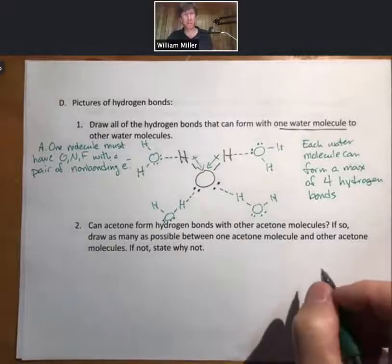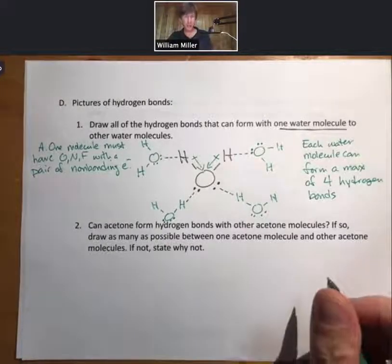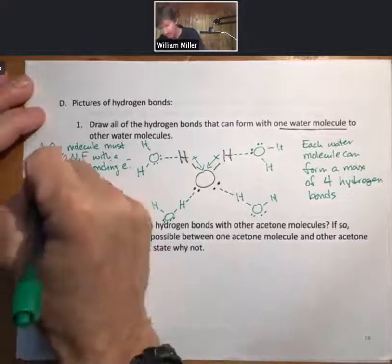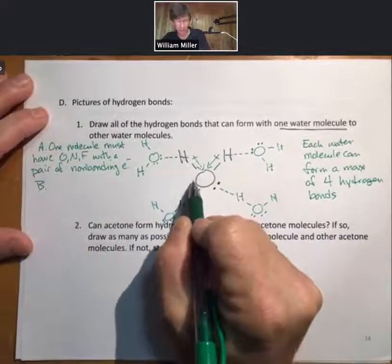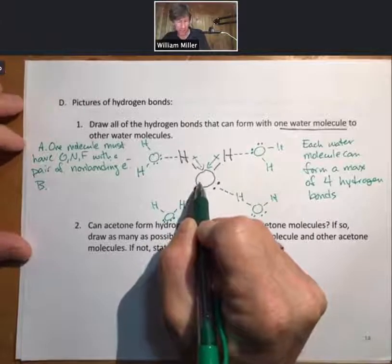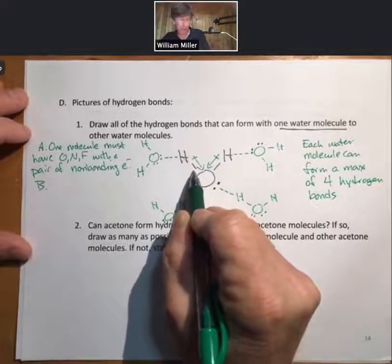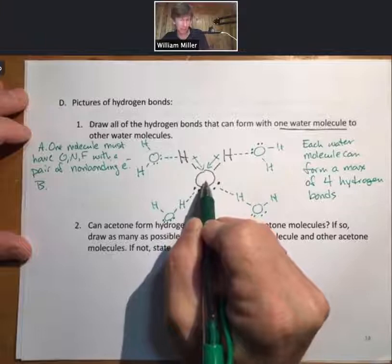So if you have an oxygen, it typically will have two pairs of non-bonding electrons. But the other thing you have to have is you have to have the other molecule. The other molecule must have hydrogen covalently bonded to oxygen, nitrogen, or fluorine.